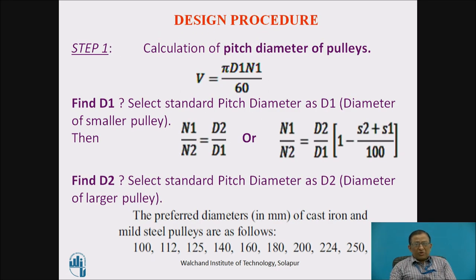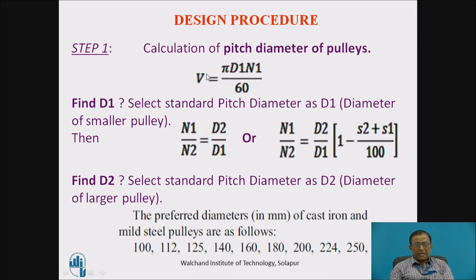The design procedure involves the following steps. First, we calculate the diameter of the smaller pulley D1 by making use of the belt velocity. This pitch line velocity is optimally assumed between 18 to 20 meters per second for overall economy of the drive. Once we decide upon this velocity, we can calculate D1 using the relevant equation. The D1 value found is then matched to a standard pitch diameter from manufacturer's data. I have shown a table of preferred pulley diameters here.